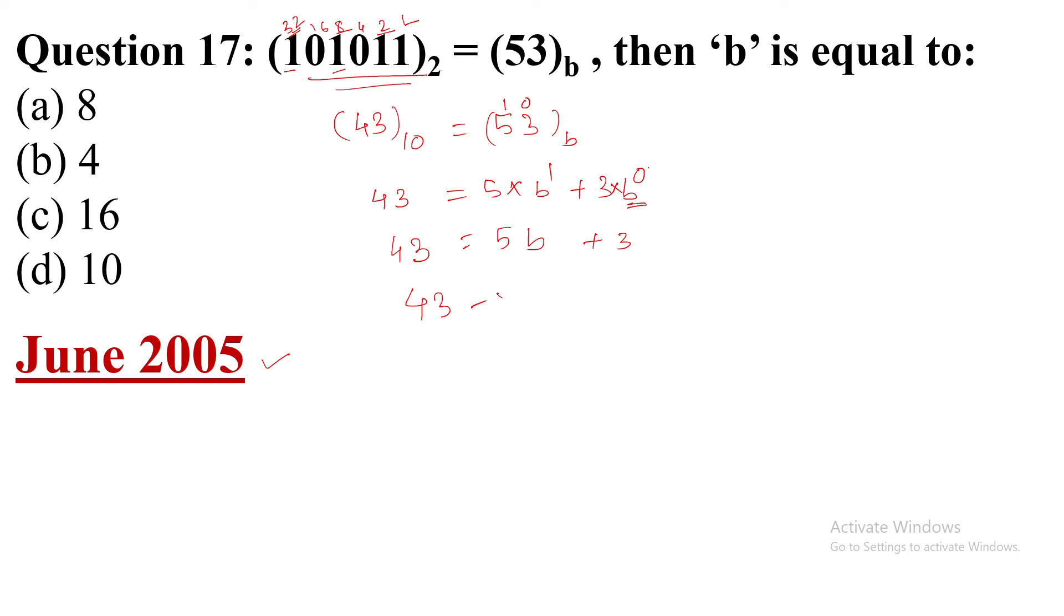So 43 minus 3. Why minus 3? Because here is given plus. 43 minus 3, so this is 40 equals 5b.